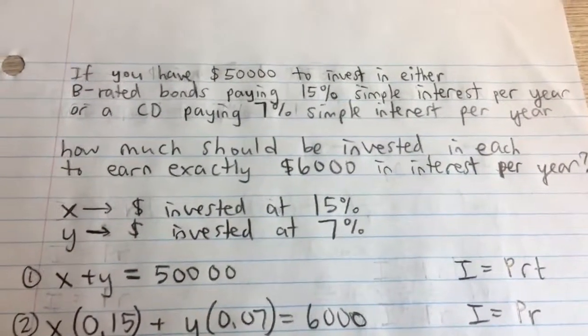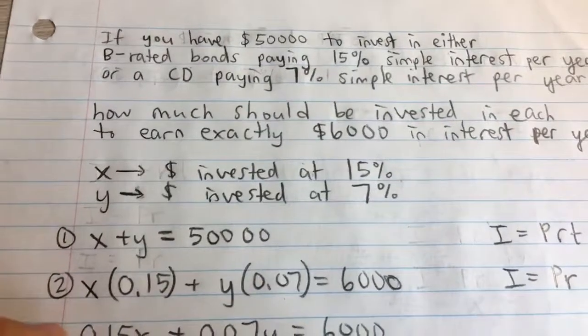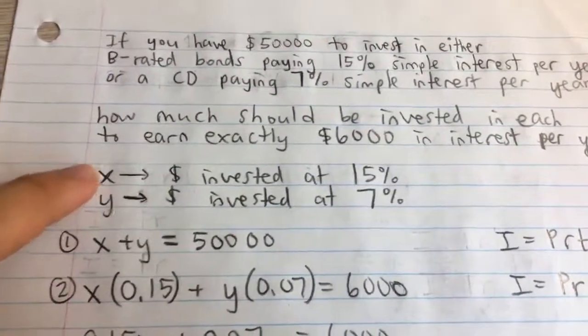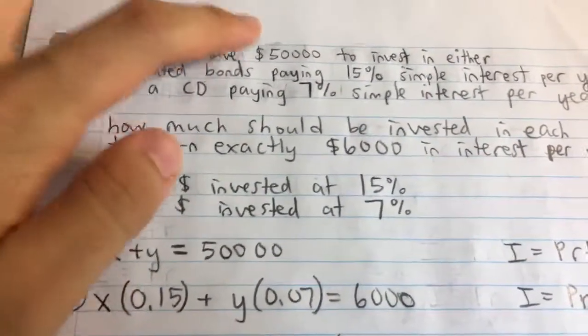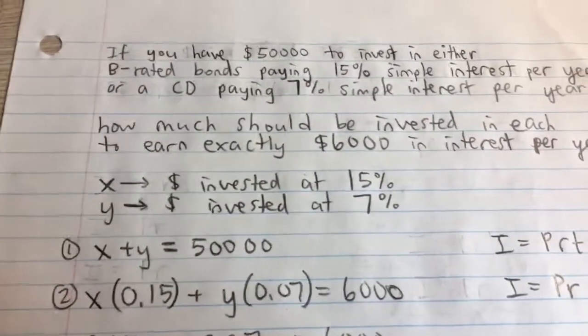First, I'll construct some equations. I know that the sum of the money invested, in other words X + Y, has to equal the $50,000 we are investing.